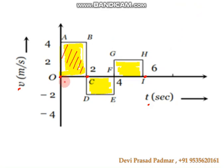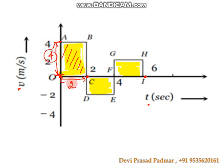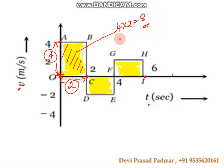For the first rectangle from 0 to 2 seconds: the length along the time axis is 2, and the breadth along the velocity axis is 4. So the area is 4 into 2, which equals 8.